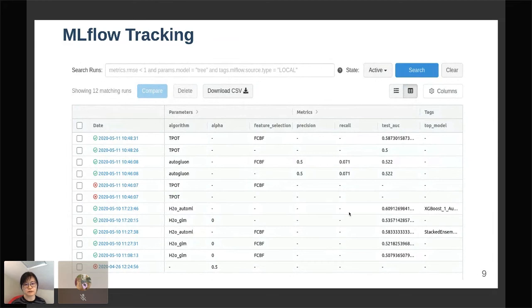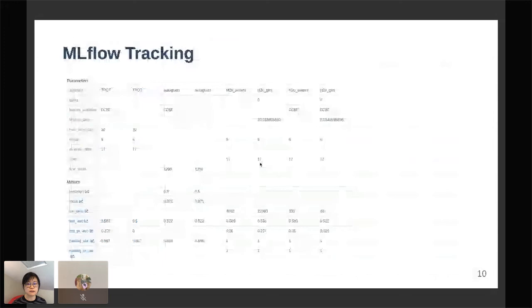This is a nice way to look at everything I've done. I can see that for H2O AutoML, my top model is actually XGBoost for the run without any feature selection, and it gave me an ensemble model for the run with feature selection.